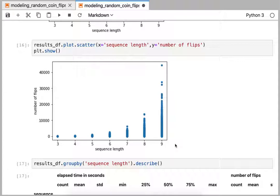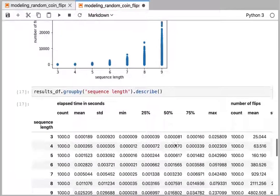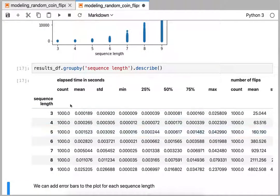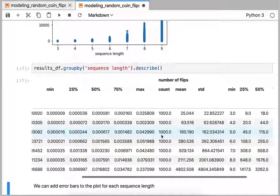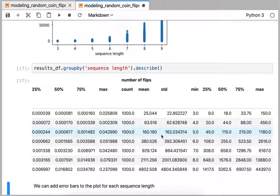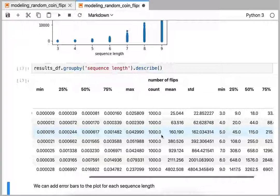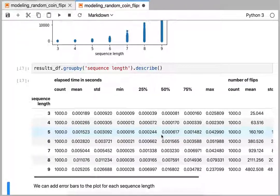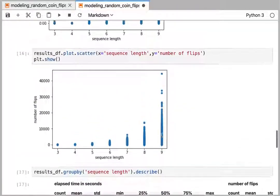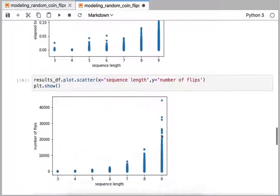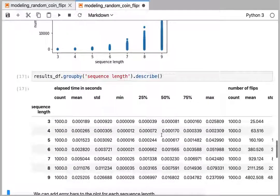So one way, if we don't want to stick with the visual, is to do a describe, and we can do that for each of the sequence lengths. So here we can see the mean time in seconds and then the number of flips as another set of data. So this is a tabular form of the statistical variation of these two plots here. So it's pretty handy, but there's a lot of numbers here and it's kind of hard to read.